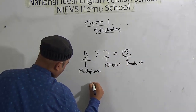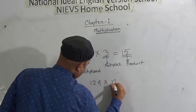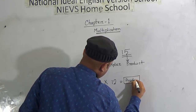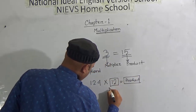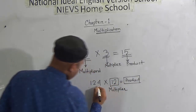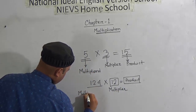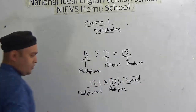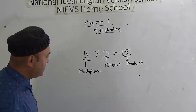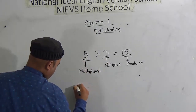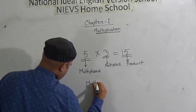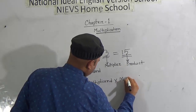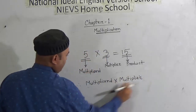Similarly, if we write 124 multiplied by 12, the answer will be the product. The number 12 is called the multiplier and 124 is called the multiplicand. Are you clear on which is the multiplicand, multiplier, and product? Now from this we can write: multiplicand multiplied by multiplier equals product. You have to memorize this.